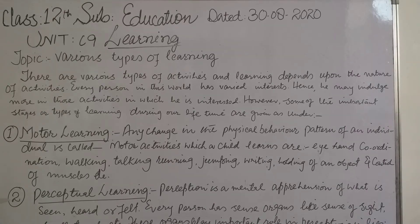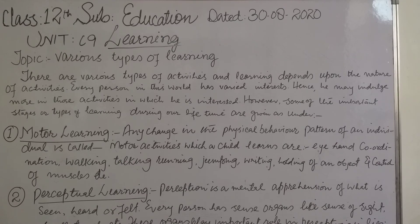Number two: perceptual learning. When the mind of the child develops, he gets sensations through different sense organs and gives meaning to them. Every person has sense organs like senses of sight, smell, touch, etc. These organs play an important role in perceptions in life. The ability to discriminate tastes, colors, sounds, and smells is acquired through perception, which is a mental apprehension of what is seen, heard, or felt. Thus, this type of learning is also based on past experiences of the person.